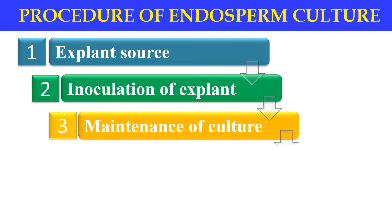The third step is maintenance of culture. Once the endosperm has been inoculated on the culture medium, we have to maintain the culture. In endosperm culture, they generally require darkness and diffused light. Differentiation takes place when the callus is transferred to bright light — 2000 to 4000 lux — and the temperature should be 25 degrees centigrade.